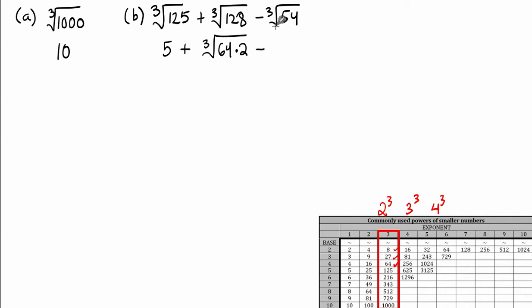Follow the same procedure for cube root of 54. Search through the table. You realize, aha, 27, that's a perfect cubic number. And it divides evenly into 54 twice. So that means you can rewrite this third term as cube root of 27 times 2.